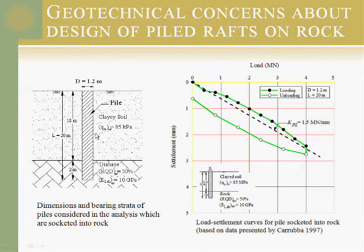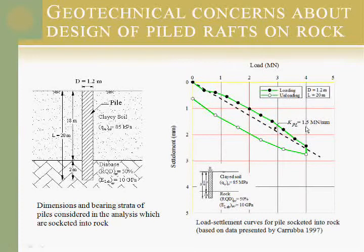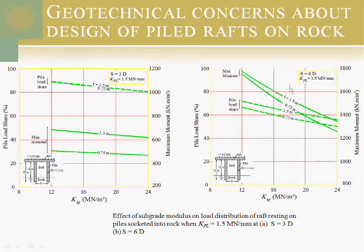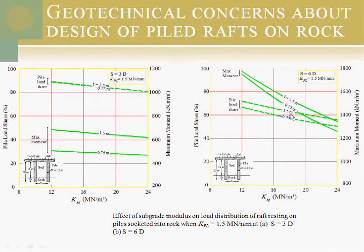For the other case where the pile is socketed into the rock, we calculated the pile spring constant, which is 1.5 MN per millimeter. This shows the difference using 1.5 MN for both 3D and 6D spacing, and as you can see, in the 6D case there is a difference even between the rigid raft and the flexible raft.